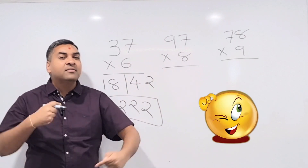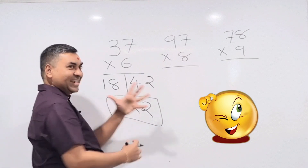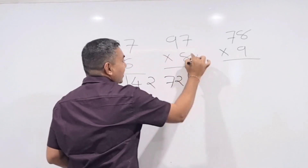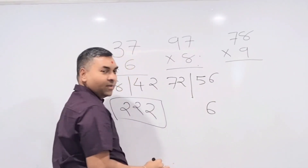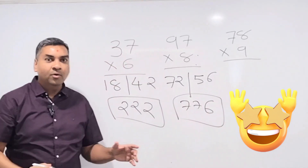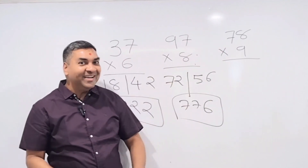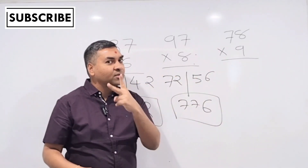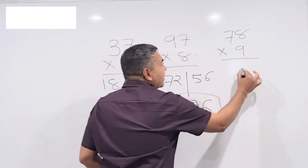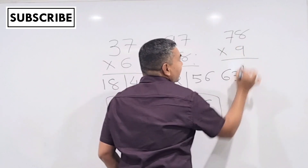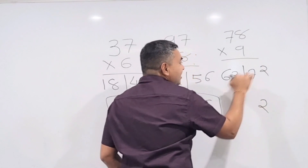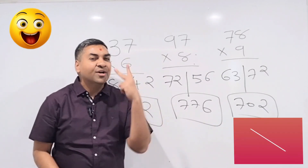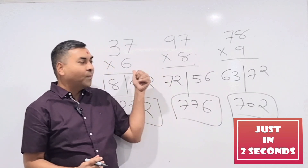Now 97×8: draw a line, 9×8=72 on the left, 7×8=56 on the right. Last digit is 6, keep it. 72+5=77. So 97×8=776. Next, 78×9: 7×9=63 on the left, 8×9=72 on the right. Last digit is 2, keep it. 63+7=70. So 78×9=702. Any table up to 100, done in just two seconds without knowing any extra tables!